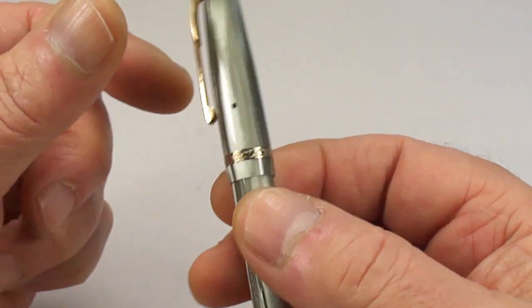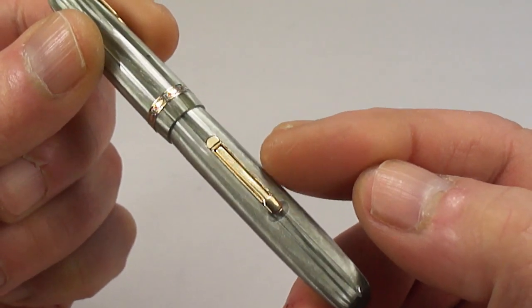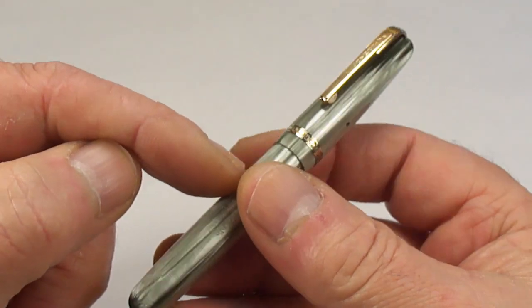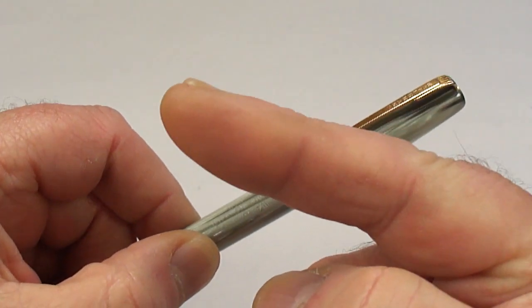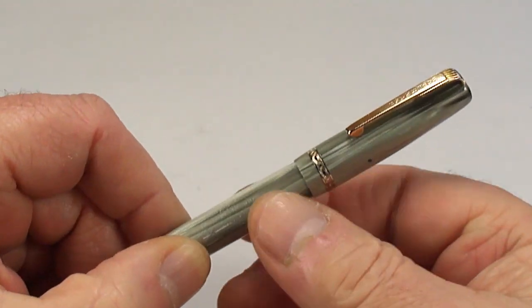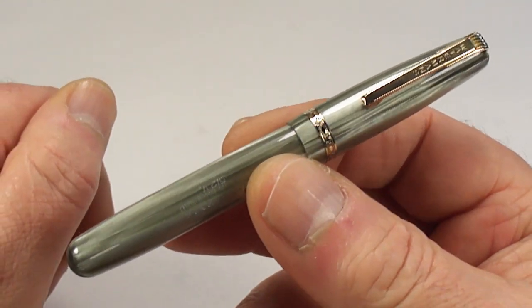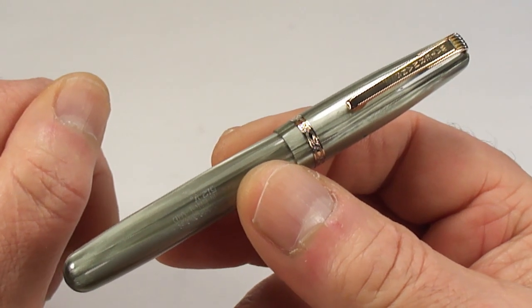...that just recently I did a video showing you how I replaced the box lever here on this pen. If you're interested in that, go and take a look. I'll leave a link at the end of the video. As I say, what we have is a Waterman's 512V fountain pen.